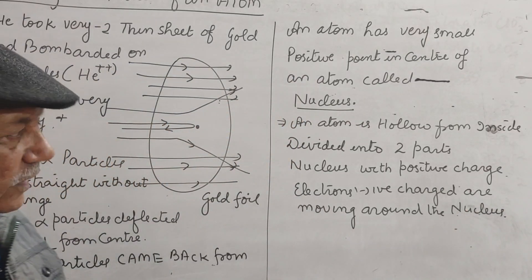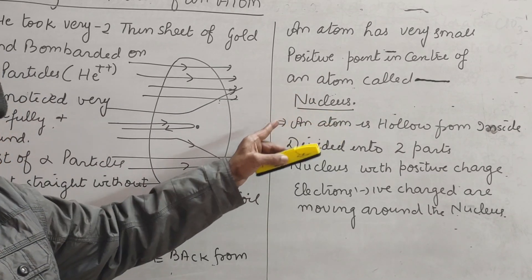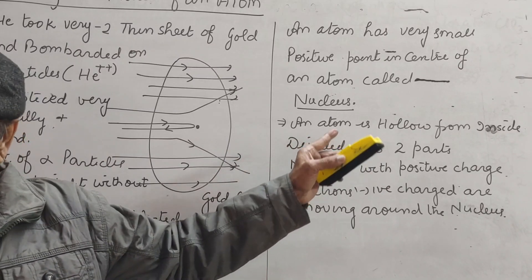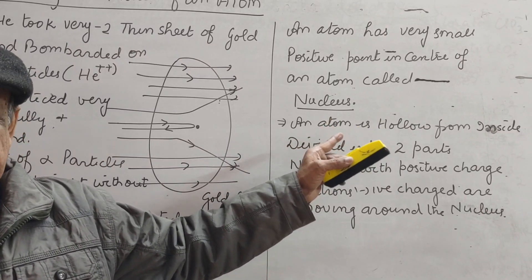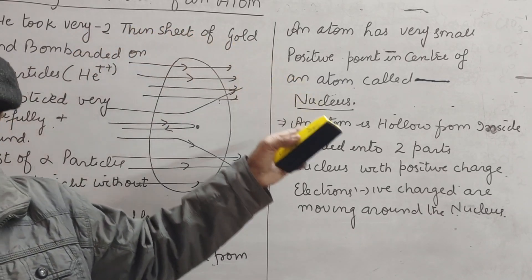Size of nucleus is very, very small as compared to the size of atom. This discovery was made by Rutherford.